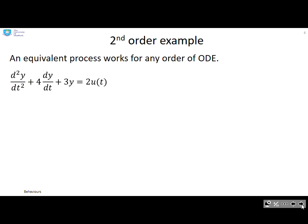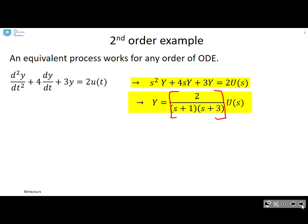Let's do a second order example. We can do an equivalent process with any order of ODE. So you see we've got an ODE here. If we take Laplace transforms of every term in that model and then rearrange it, you see we end up with this interesting format. We have the output over here, we have the input over here, and then in the middle we have parameters which represent the system model.